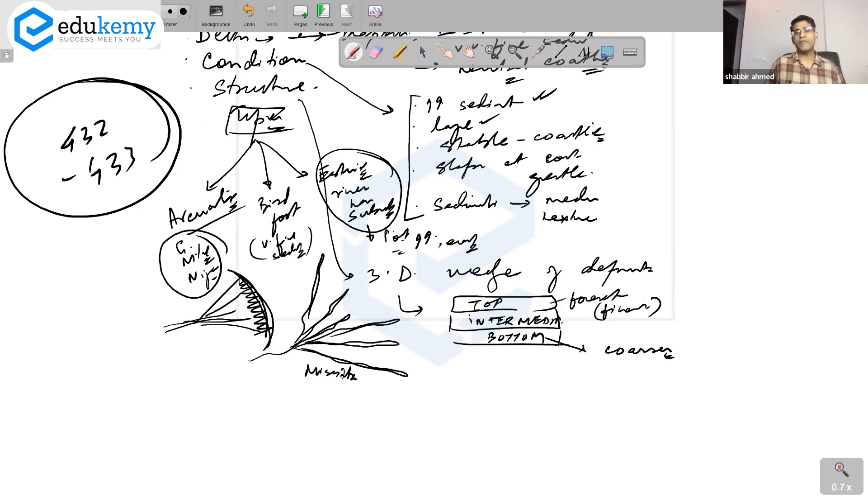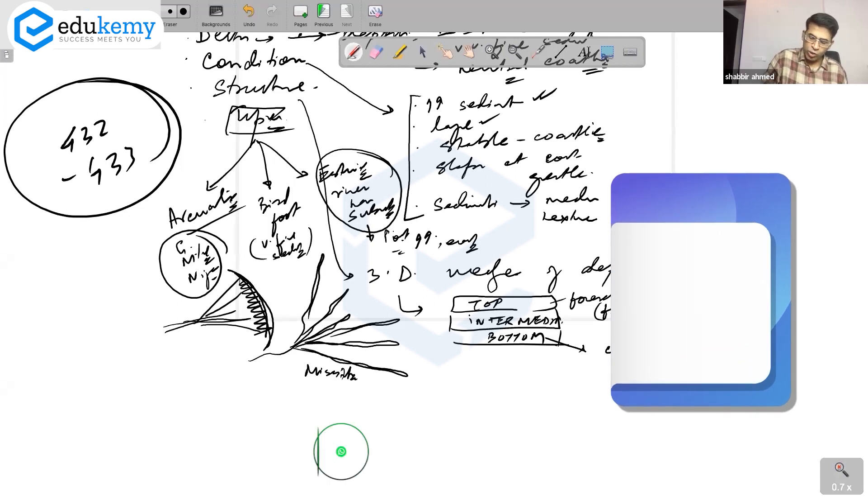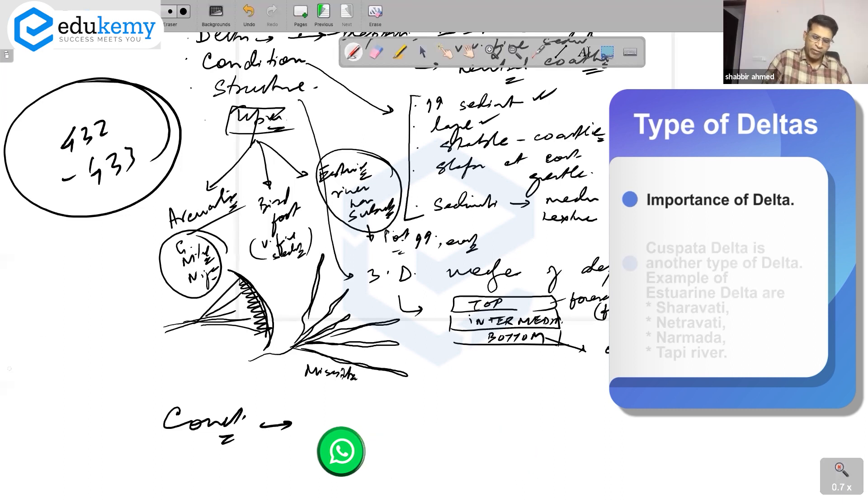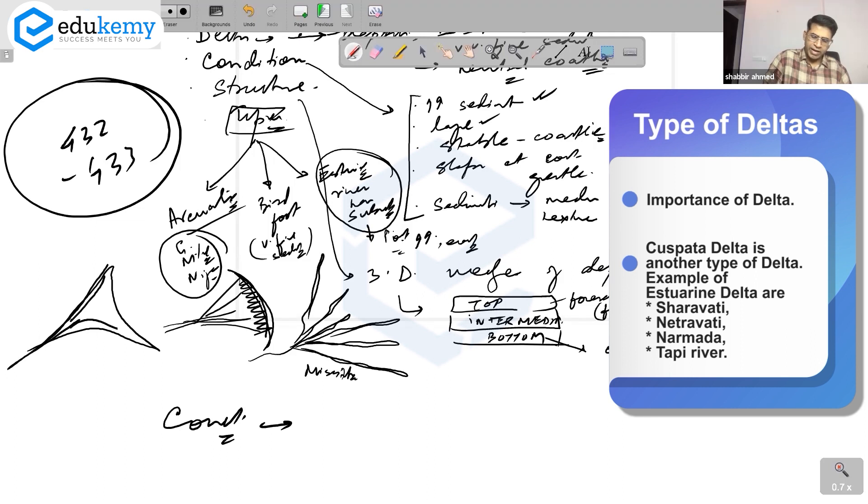In conclusion, write about the importance of deltas. They are ecologically important. Cuspate delta is not very common - it looks something like this. It's not a very common form. You can mention it and move on. Keep it to arcuate deltas, bird foot deltas, and estuarine deltas.